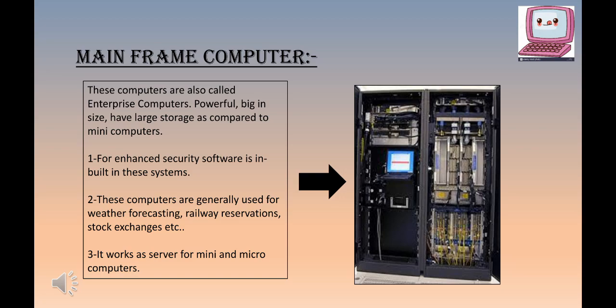Our third type of computer is the mainframe computer, also called an enterprise computer. Compared to mini computers, mainframe computers are more powerful, bigger in size, and have larger storage. The order so far is: first micro computer, second mini computer, and now third is mainframe computer.